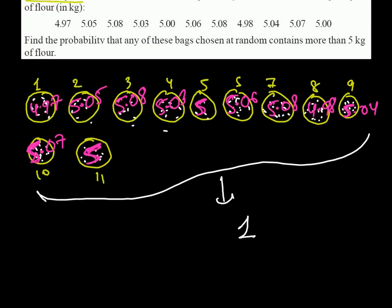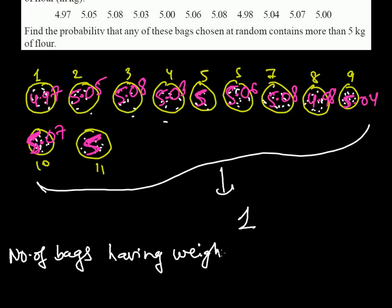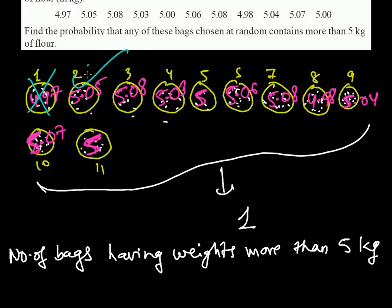To solve this, let's find how many bags have weights more than 5 kg. Going through them one by one: 4.97 is not more than 5. Then 5.05 — yes, this is more than 5, that's one. Then 5.08 — more than 5, that's two. Then 5.03 — more than 5, that's three.